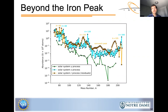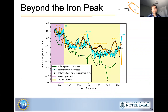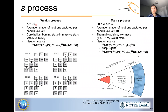Focusing on the s-process, models indicate it can be divided into two sub-components: a weak component responsible for mass numbers less than 90, and a main component responsible for mass numbers from 90 to 205. The average number of neutrons captured per seed nucleus is around three for the weak s-process and around ten for the main s-process. They also differ in the fraction of seed nuclei subjected to the neutron exposure.